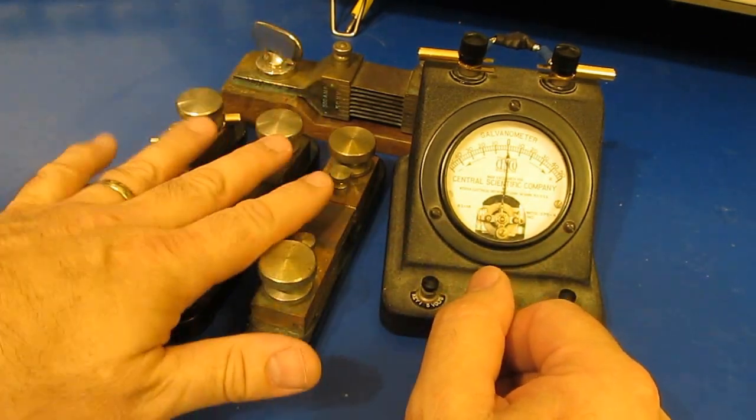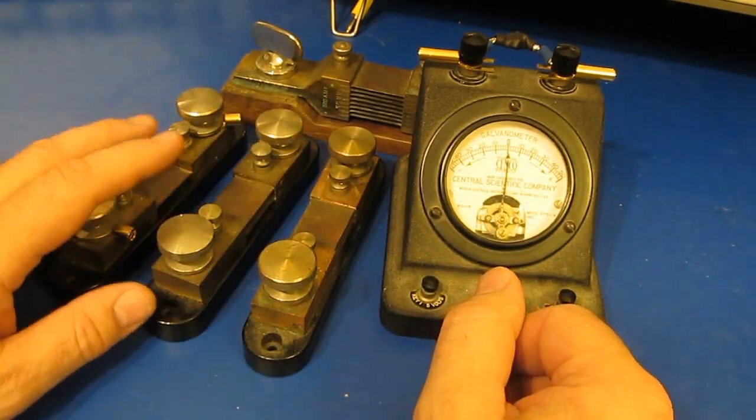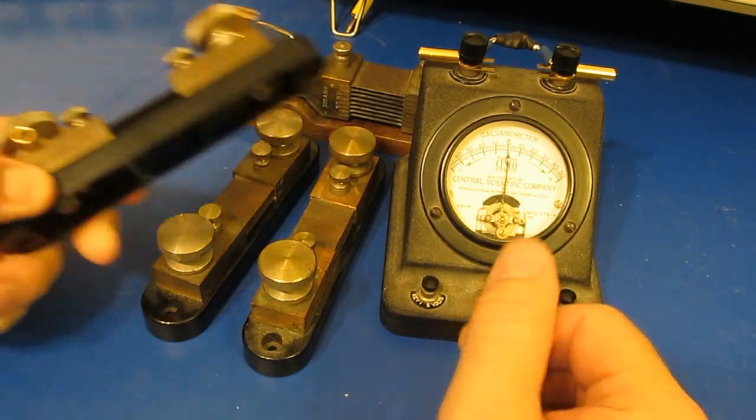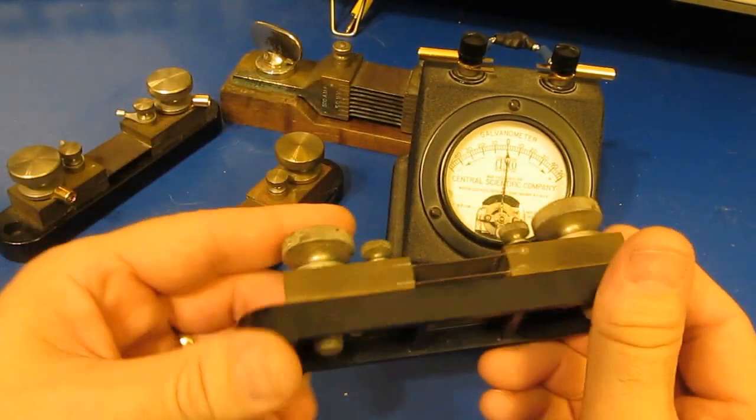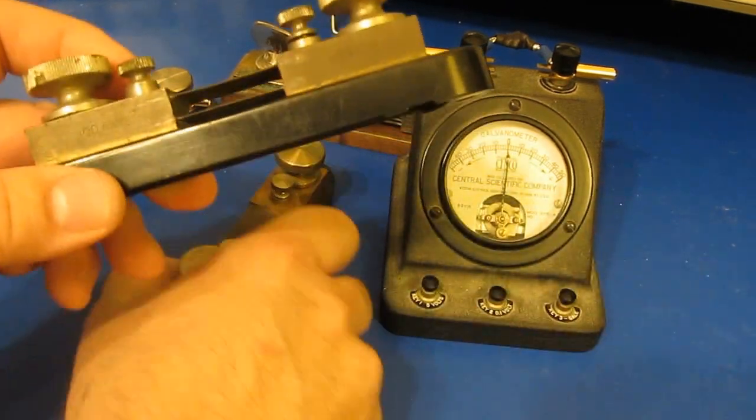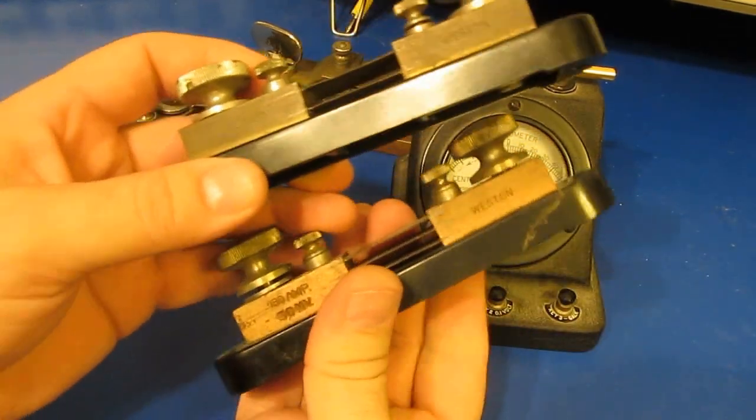These are all shunts that put out 50 millivolts depending on the current range. This happens to be a 50 amp one, this one is rated for 100 amps, and this one is a 150 amp. The shunt in the back is rated for 500 amps.